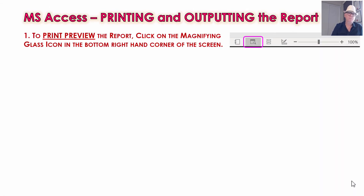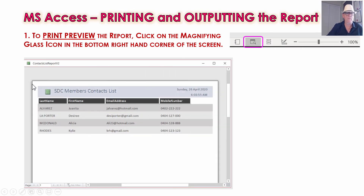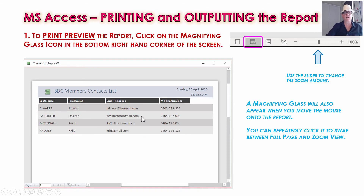Now for printing and outputting the report. I've finished making the report — it looks really good and we're ready to print it. Instead of Layout View, click on the magnifying glass icon and you'll be in Print Preview mode. Access will show you a white piece of paper and a preview of how your report will look printed out. You can use the slider at the bottom to change magnification. There's also a magnifying glass icon where clicking once magnifies in, and clicking again zooms back out to show the whole page.